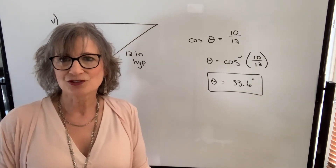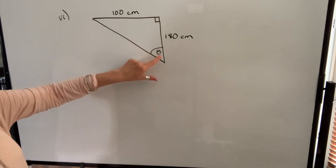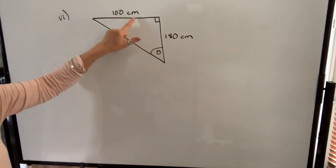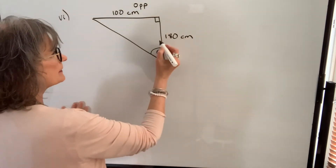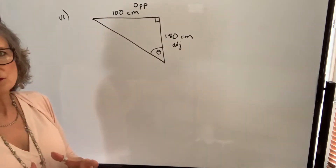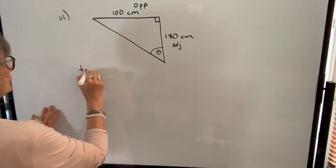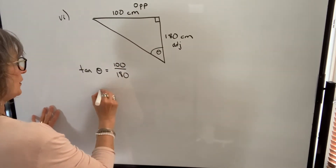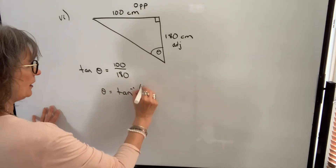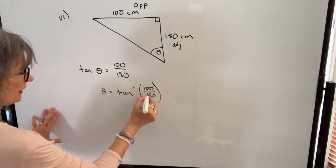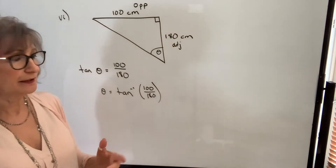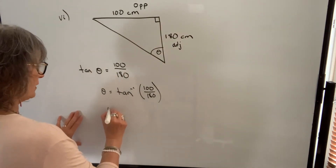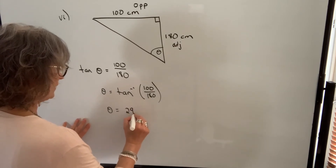Let's try an example with the tangent function. We have a right triangle where we don't know the angle, we don't know the hypotenuse, but we know the opposite side and the adjacent side. The trig function that uses opposite and adjacent is the tangent function. So tangent of theta equals the opposite, which is 100, divided by the adjacent, which is 180. Therefore theta equals inverse tan of 100 divided by 180. You can simplify 100 over 180 to 5 over 9. Either way, you should get 29.1 degrees.